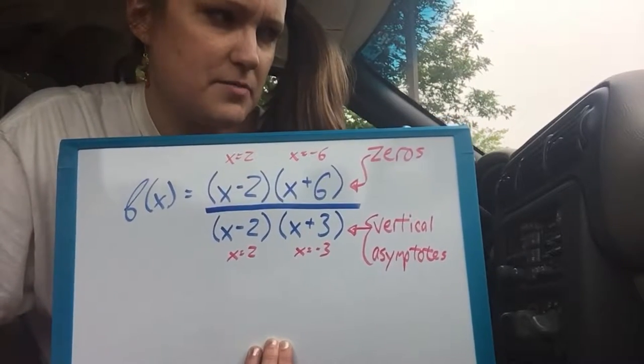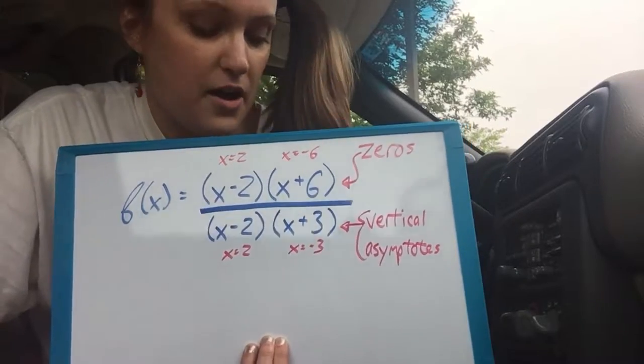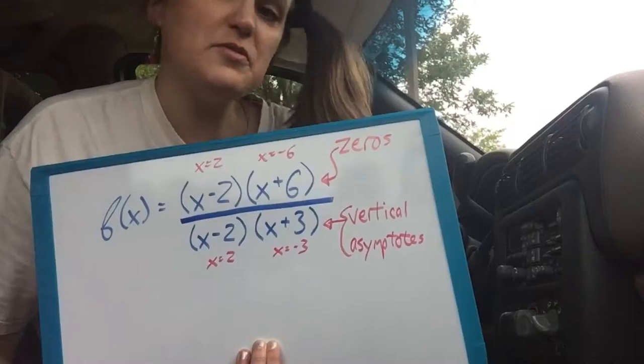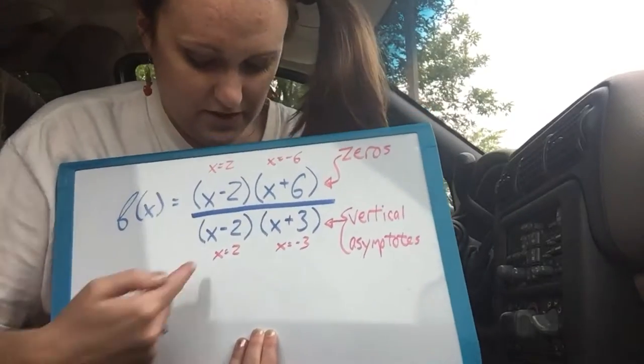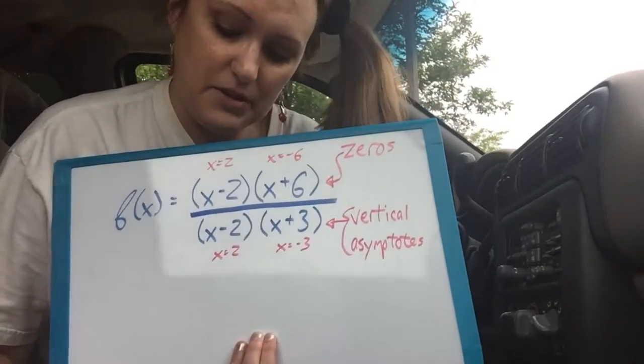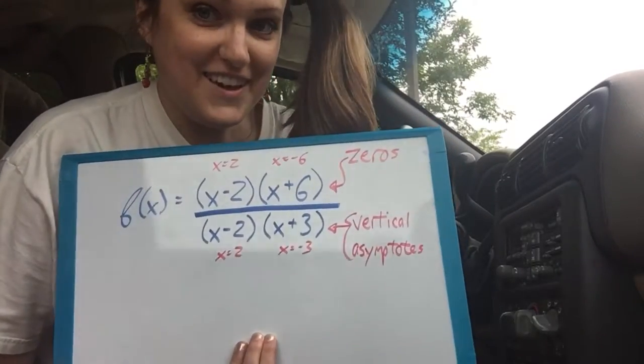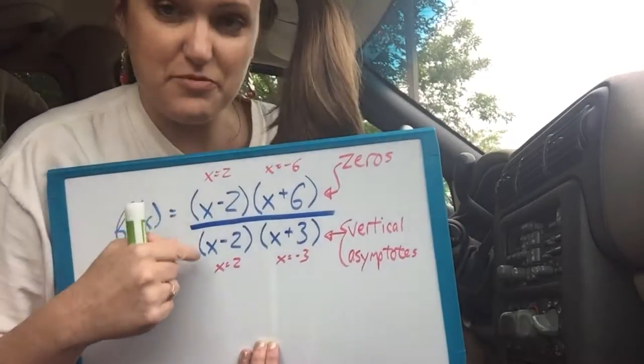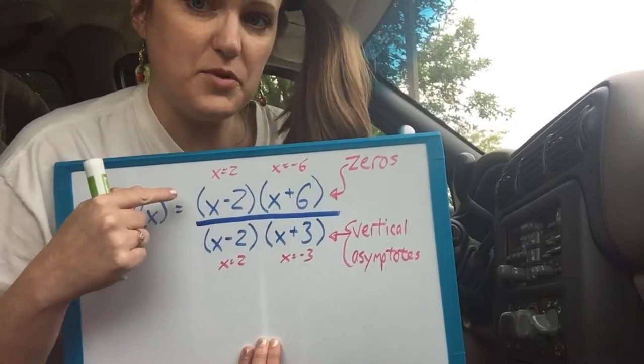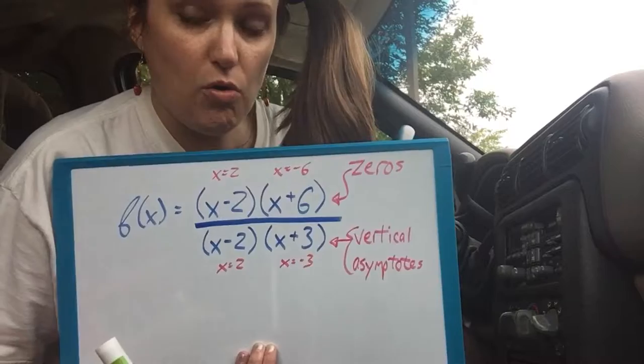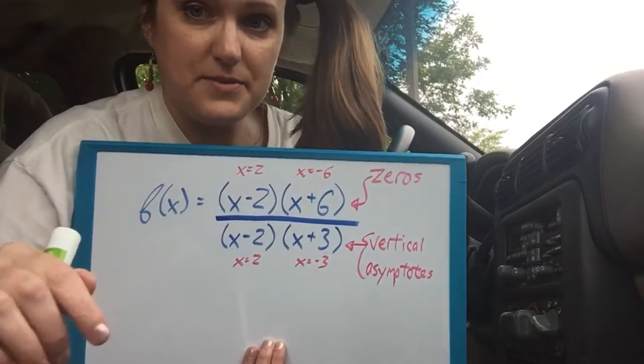What about the horizontal asymptotes? What about holes? So I kind of lied to you about there being two vertical asymptotes because one of these two vertical asymptotes is not really a vertical asymptote. It is a hole. Can you tell which one? It is the one that is repeated in the top. So anytime you have a factor that's identical on top and bottom, they cancel out and it's a hole in the graph, not an asymptote.